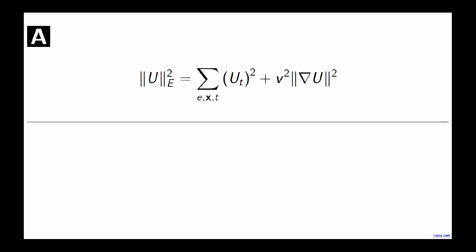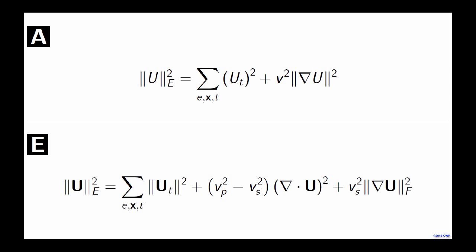Let me show you how this is possible. This is the energy norm for the acoustic case — very similar to the one shown earlier, with slightly changed notation. We can also derive an energy norm for the elastic case. For the elastic case, this involves VP and VS velocities. However, it is derived from the same energy conservation principle used in the acoustic case.